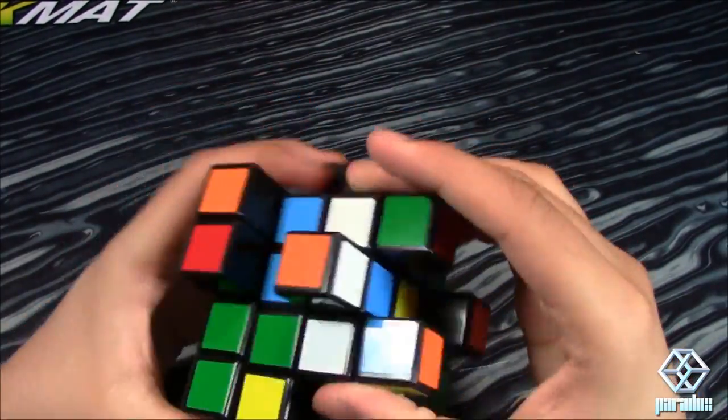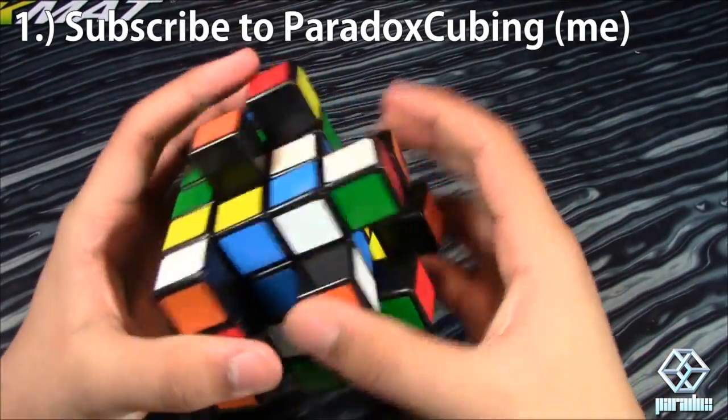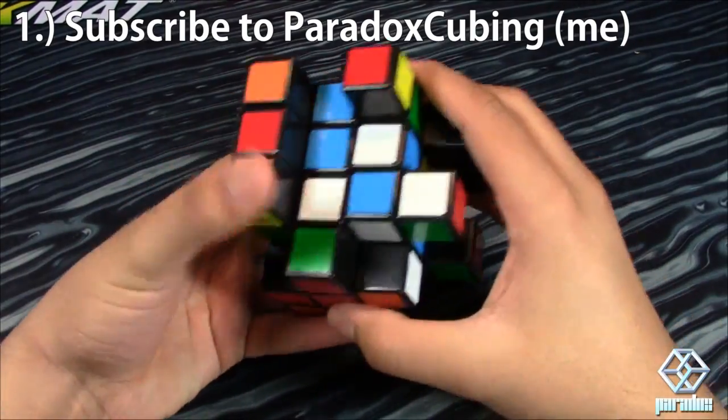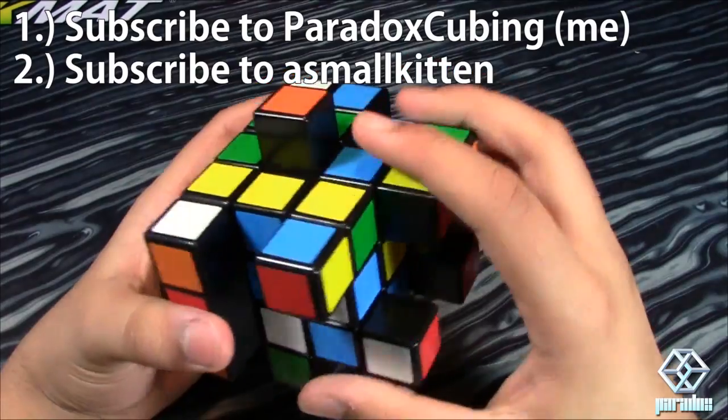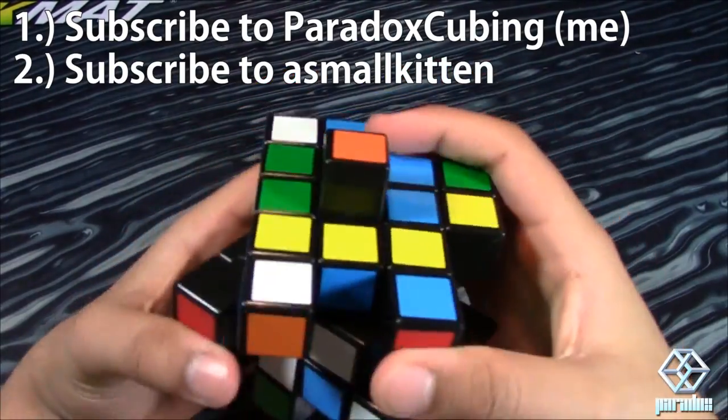So first of all, you need to be subscribed to me, obviously, and since this contest is sponsored by The Cubicle, you also need to be subscribed to A Small Kitten, which is Phil's YouTube channel, and Phil is the owner of The Cubicle.